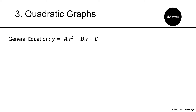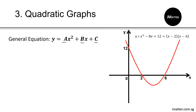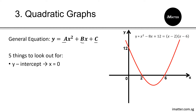Now let's look at quadratic graphs. The general equation is y equals ax² plus bx plus c, where a, b, and c are numbers that can be positive or negative. Here we have a simple plot of a quadratic graph with the equation y equals x² minus 8x plus 12. For quadratic graphs, there are 5 things to look out for. First is your y-intercept — substitute x equals 0 into the equation. Hence your y-intercept here will be 12.